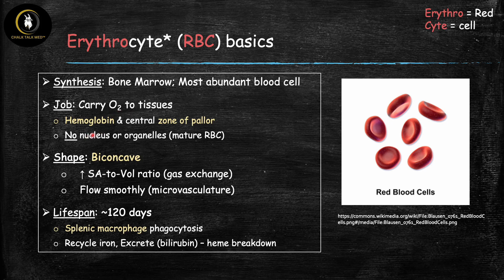A mature red blood cell carries nothing but hemoglobin inside of it. As the red blood cells mature in the bone marrow they get rid of their nucleus and organelles so they make room for as much hemoglobin as possible. All of the red blood cells you can see here are packed with hemoglobin around the edges and they have a central pale zone known as the central zone of pallor. This is a normal appearance of a red blood cell, supporting the fact that its main function is to carry oxygen to tissues via hemoglobin.